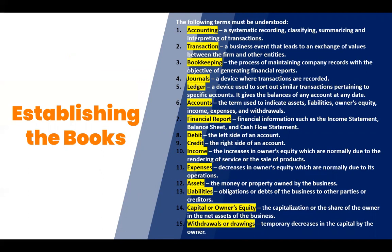Establishing the books: when one starts a business, the type and arrangement of books and records most suitable to the particular operation should be established, keeping in mind the taxes and other government requirements and their respective due dates. In establishing the books, the following terms must be understood: 1. Accounting — a systemic recording, classifying, summarizing, and interpreting of transactions. 2. Transaction — a business event that leads to an exchange of values between the firm and other entities.